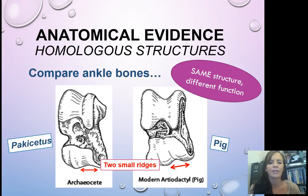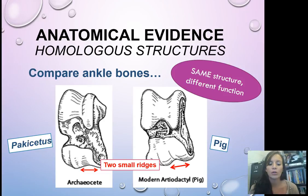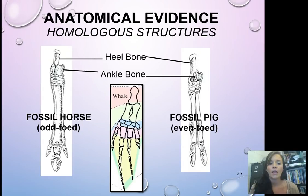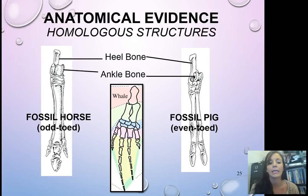So there's some anatomical evidence. Homologous structures — same structure, different function. If we look at Pachycetus versus the pig, they have similar structures but lived at different time periods and used those ankle bones for different things, but you'll see with the red arrows they have the same small ridges. Another example is the heel bone and ankle bone present in a fossil horse and a fossil pig — and if you look at the whale picture in the middle, you'll see the same general structure.